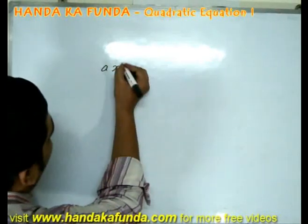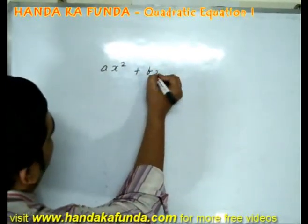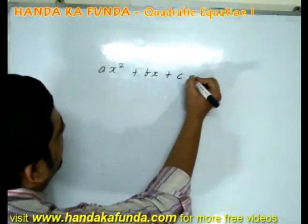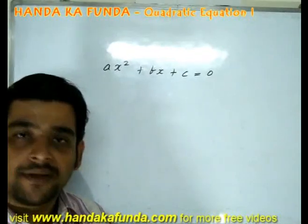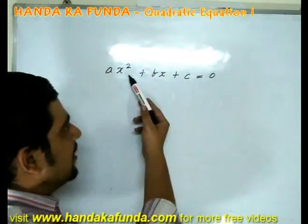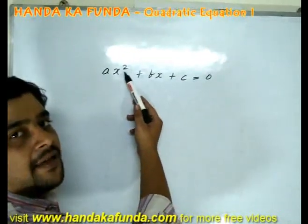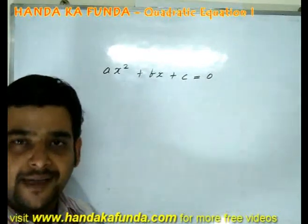That would be of the format ax square plus bx plus c is equal to 0. Quadratic equation means that the degree of the equation is 2, which is x here, the variable. The highest power of x is 2.